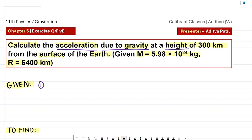In the given information, we have the height at which we have to calculate the value of g. We represent this height as small h, which is 300 kilometers from the surface of the earth. We convert 300 kilometers to SI units, so it becomes 0.3 into 10 to the 6 meters.